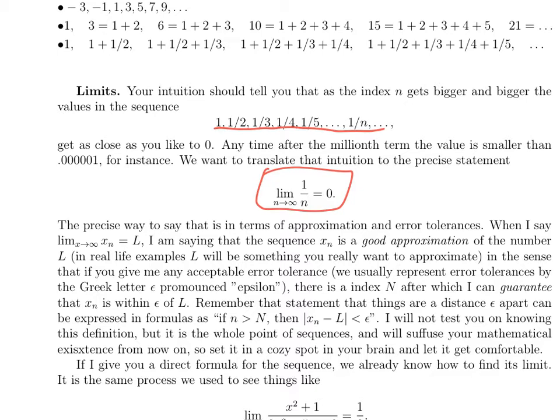It's an idea that will keep coming up in this class and in others in more and deeper ways. It has to do with approximation and error tolerances. So when I write something like the limit as n approaches infinity of x_n equals L, I'm saying that the sequence x_n is a good approximation to the number L. In this case, an easy case—why would you want to approximate zero? More often L will be something that it would be helpful to be able to approximate, like square root of 2 or pi or some quantity you don't necessarily understand.